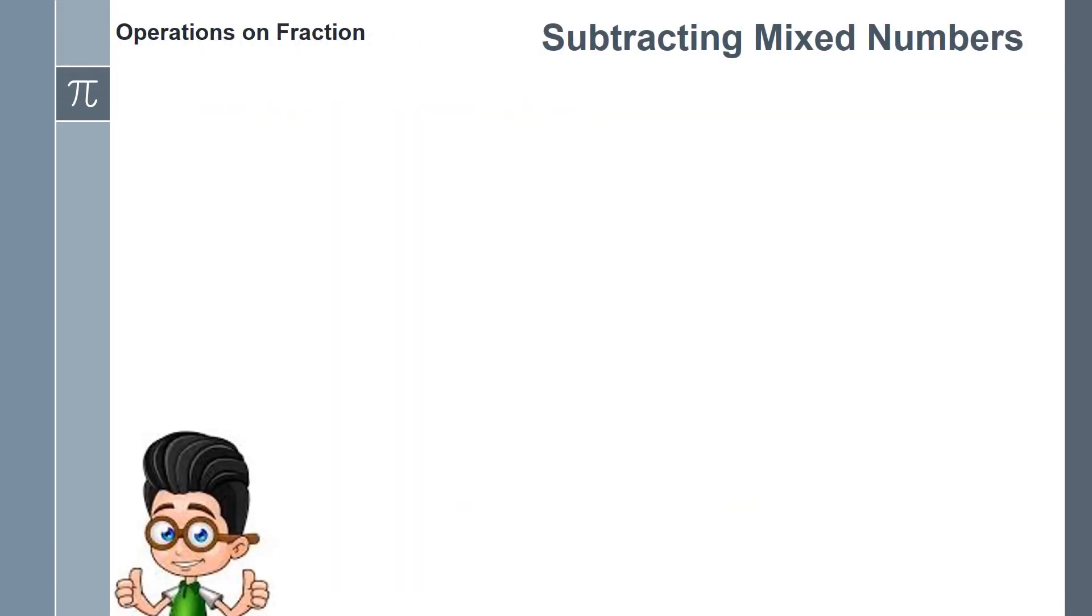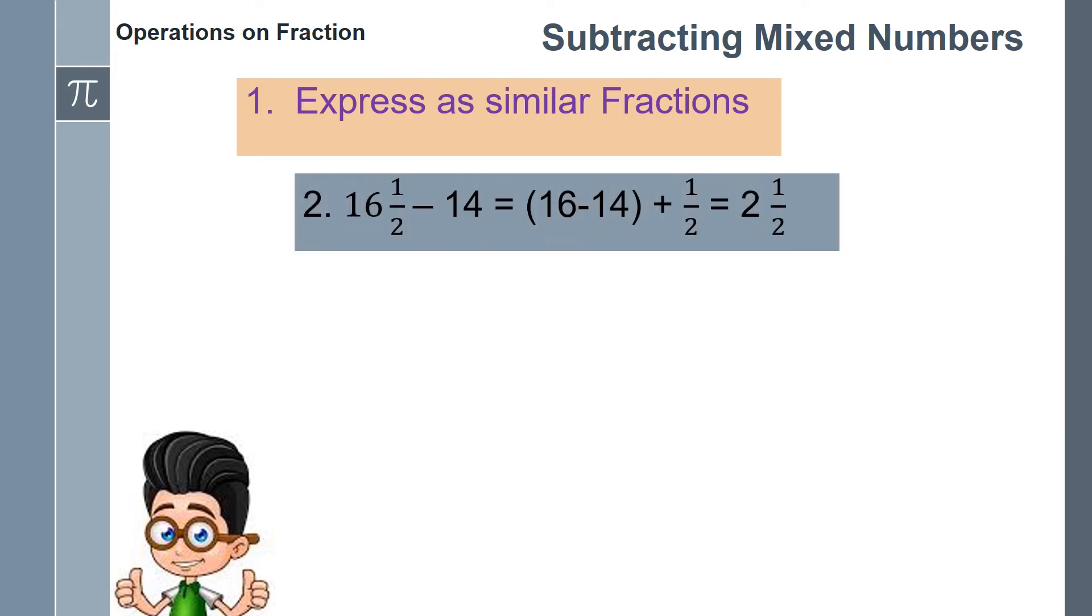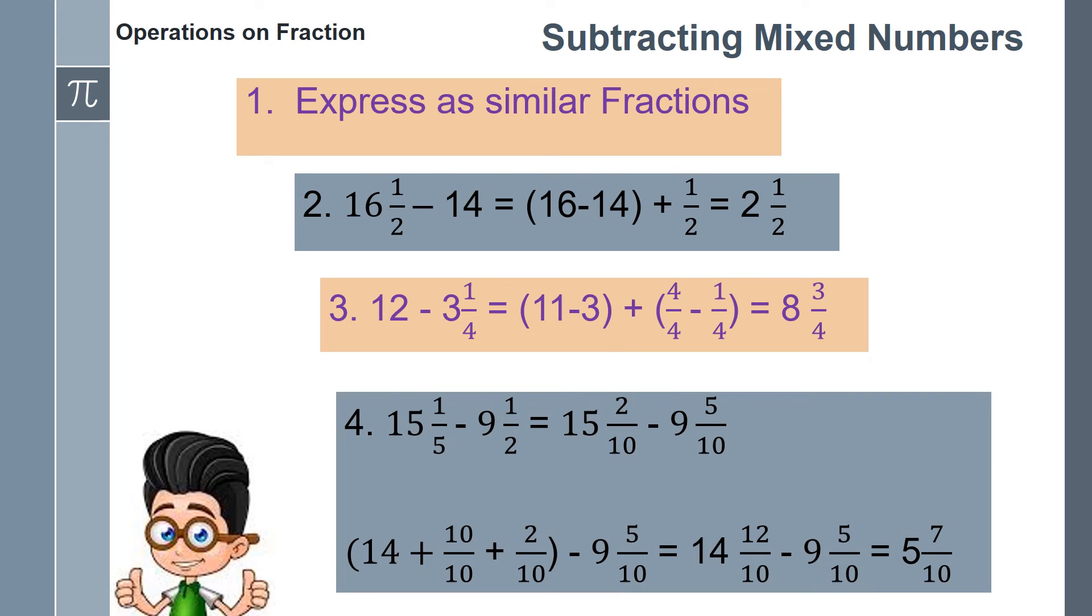To subtract mixed numbers, there are several rules that we are going to follow. One: As usual, change the fractions to similar fractions. Two: Subtract the whole numbers and fractions separately. Three: If the minuend is a whole without a fraction, borrow 1 from it and change it into a fraction whose numerator is equal to the LCD and from this fraction subtract the subtrahend fraction. Four: If the subtrahend fraction is greater than the minuend fraction, borrow 1 from the minuend whole number and change it into a fraction whose numerator is equal to the LCD, add this to the minuend fraction and from the result subtract the subtrahend fraction.